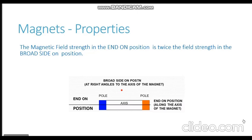Every magnet is going to have a magnetic field around it. In the area surrounding that magnet there will be a presence of a magnetic field. The strength or power of this magnetic field is not uniform at all locations around the magnet — it keeps on changing depending upon the location.